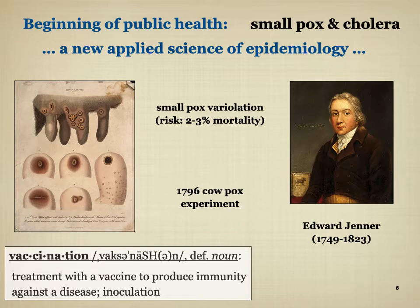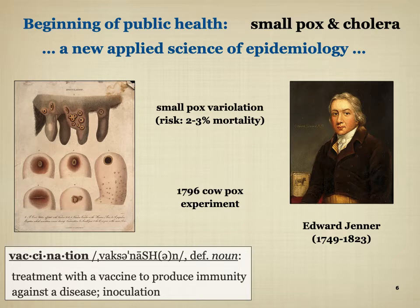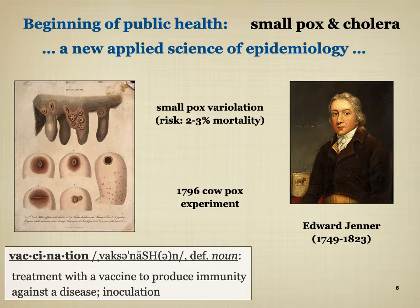What Edward Jenner did was a little different. He had heard anecdotally that milkmaids — women working with cows — often got a different, non-deadly disease known as cowpox. For reasons not fully understood, these milkmaids were much less likely to get smallpox. The theory was that exposure to cowpox reduced your risk of getting smallpox and dying from it.